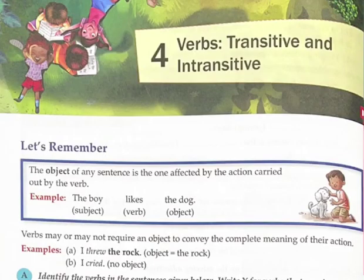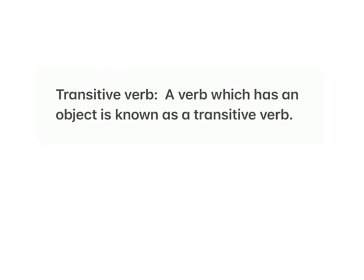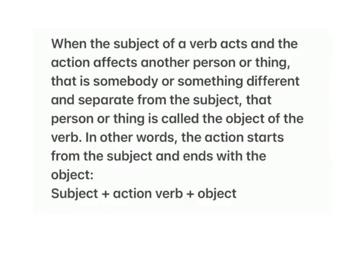Lesson 4. Verbs: Transitive and Intransitive. Transitive verb — a verb which has an object is known as a transitive verb. When the subject of a verb acts and the action affects another person or thing — that is somebody or something different and separate from the subject — that person or thing is called the object of the verb. In other words, the action starts from the subject and ends with the object: subject plus action verb plus object.